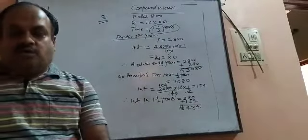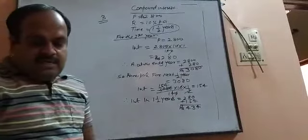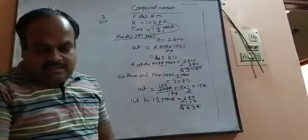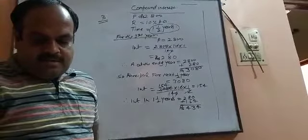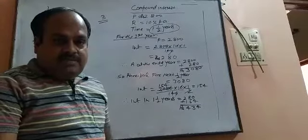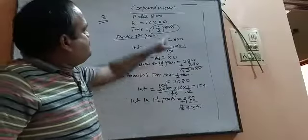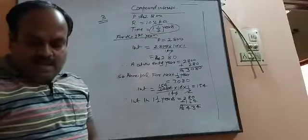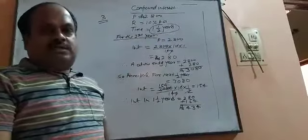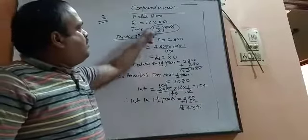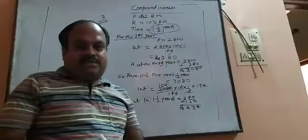In question number 3, the principal is 2800. The rate of interest is 10% per annum. And time is 1 whole 1 by 2 years. We have to calculate the compound interest.